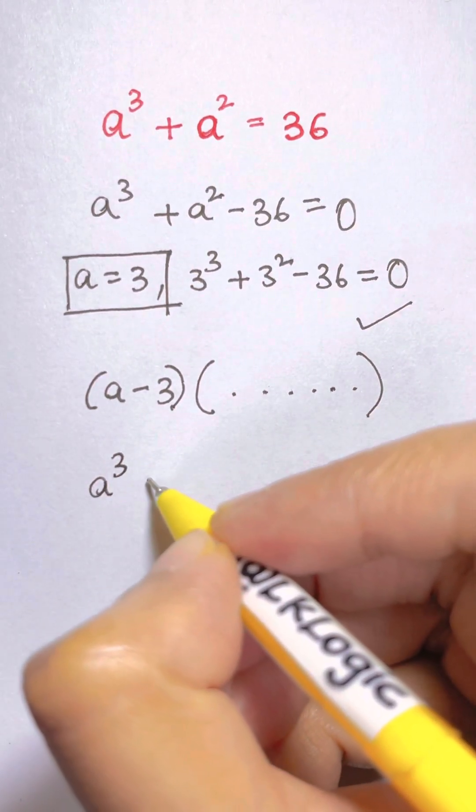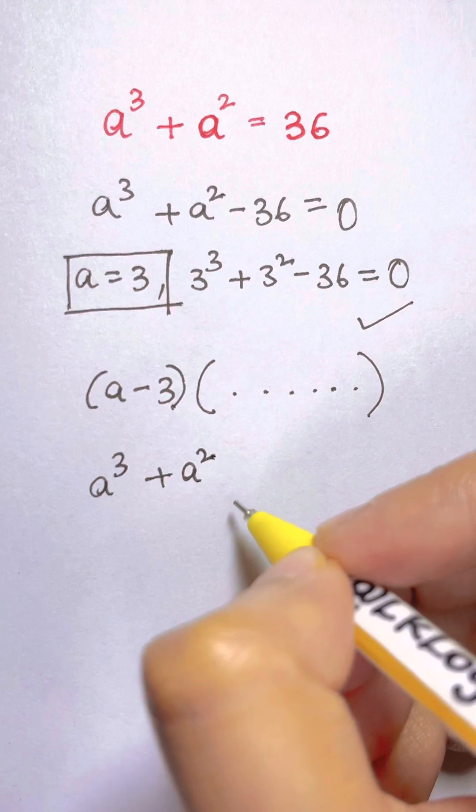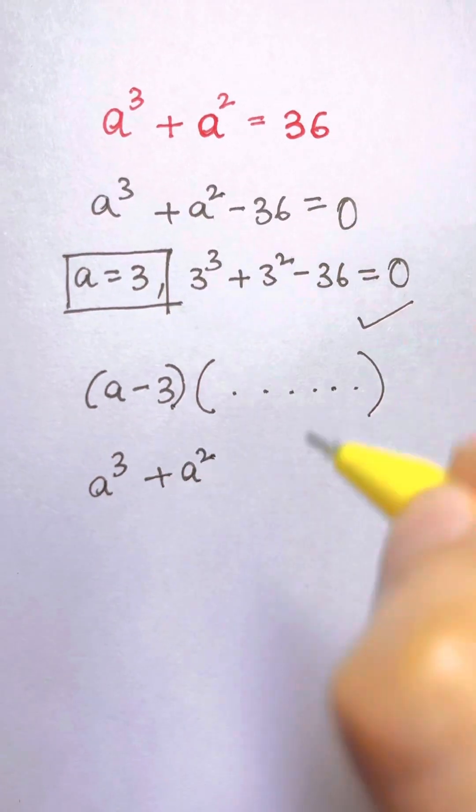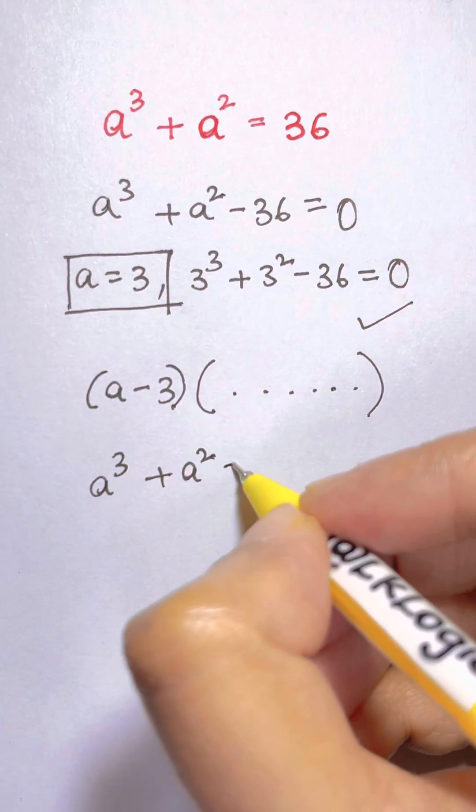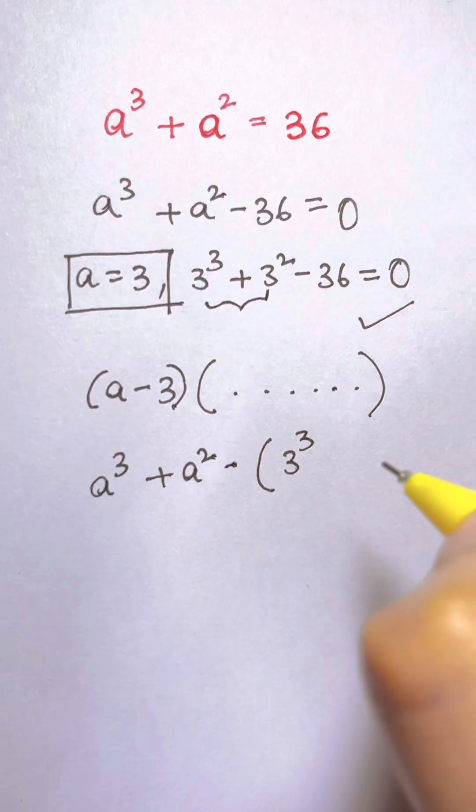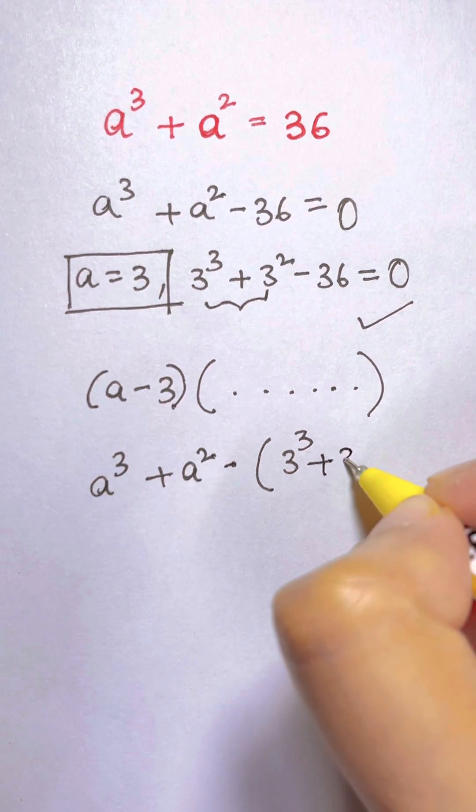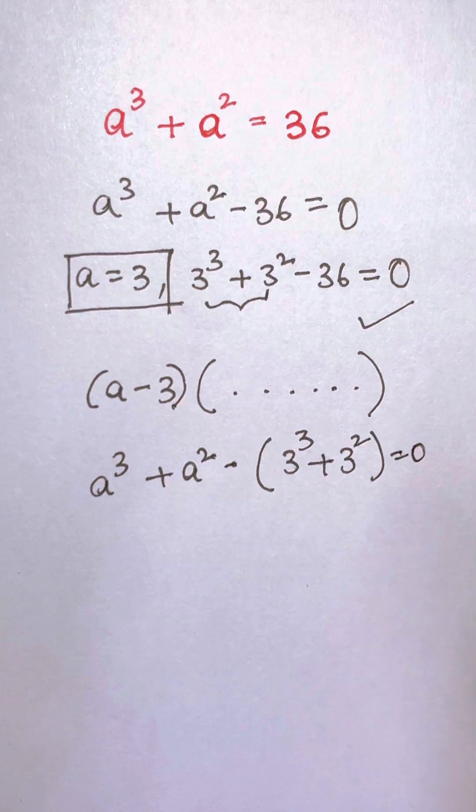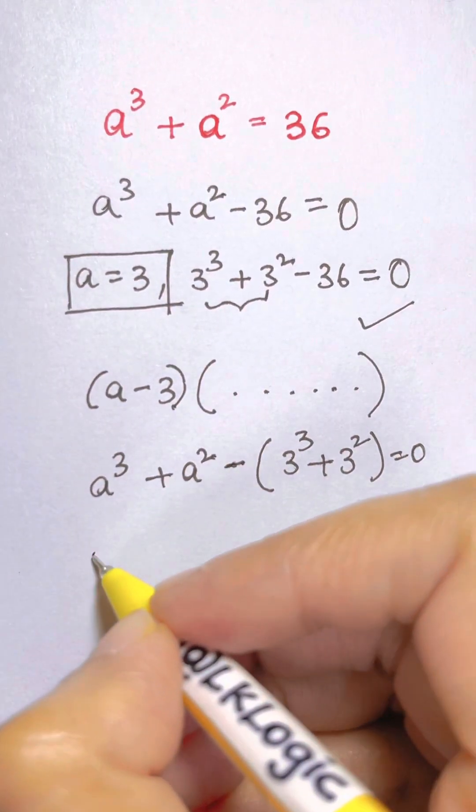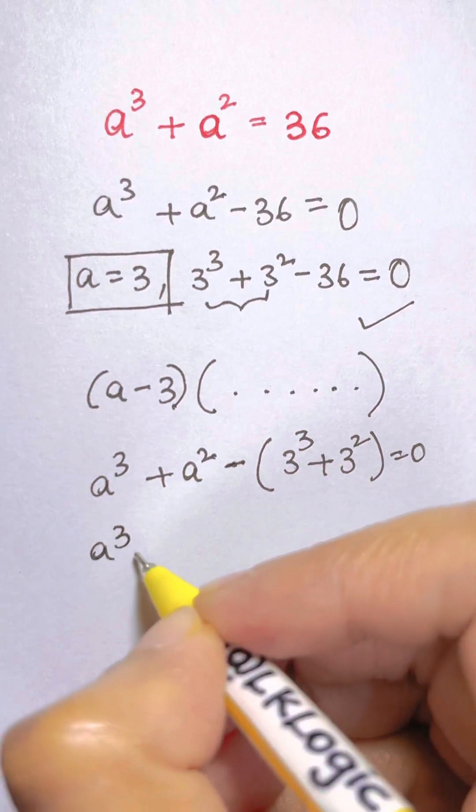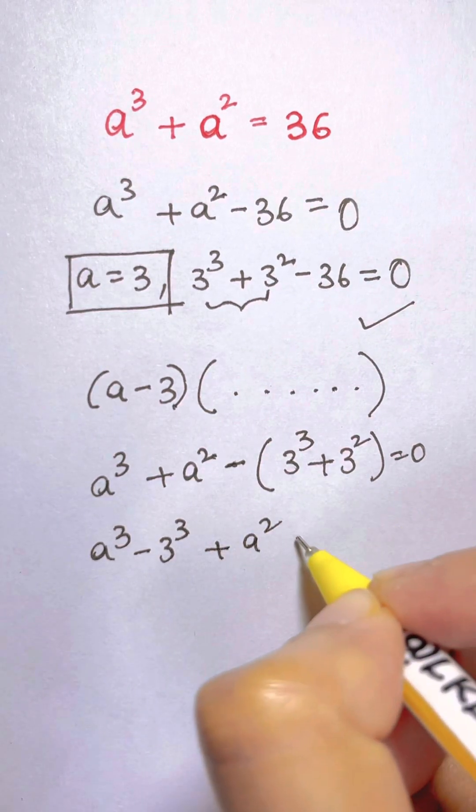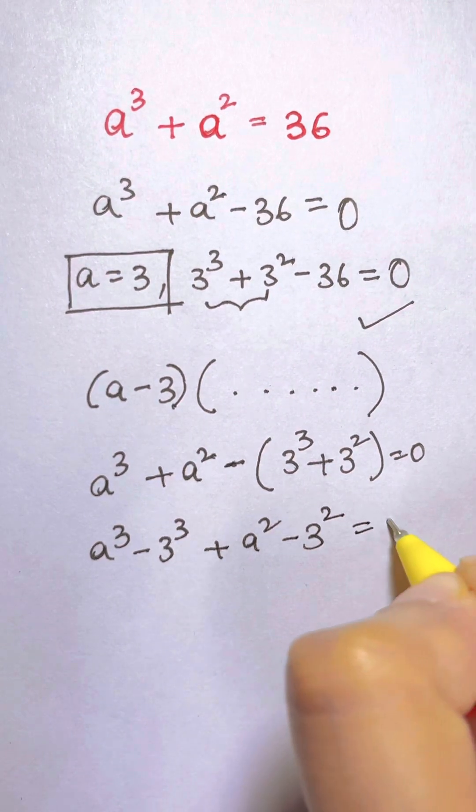a³ + a² and then for this 36, negative 36 can be written as 3³ + 3² like how we have written here. So a³ + 3³ + a² - 3² = 0. Now I am going to open up the brackets. So a³ - 3³ plus a² - 3² = 0.